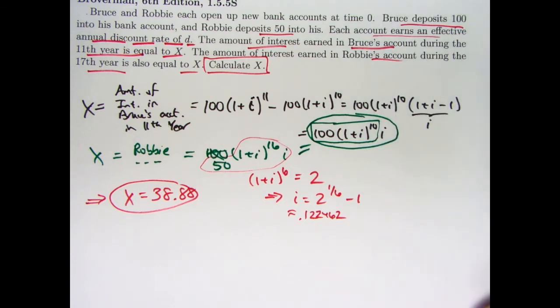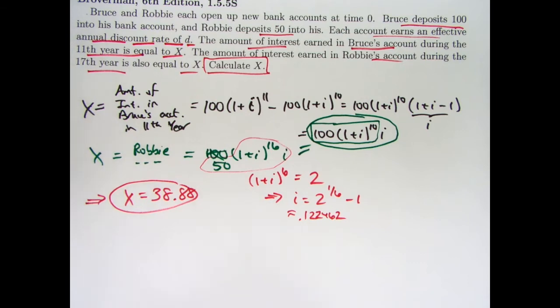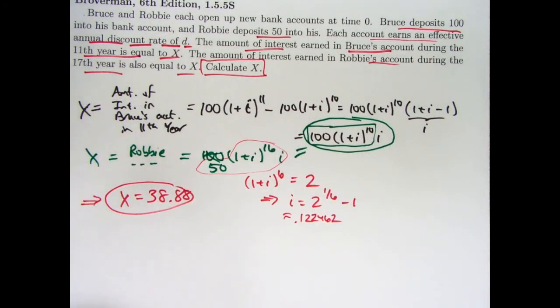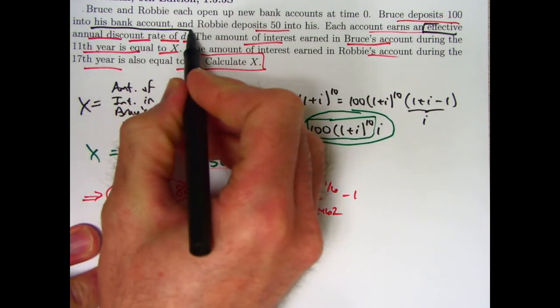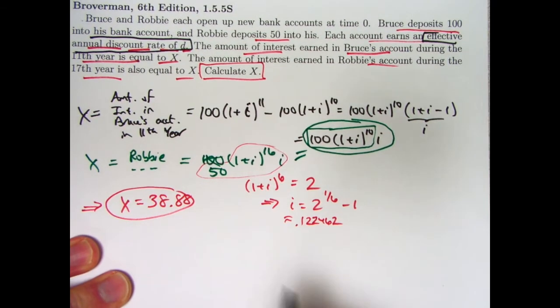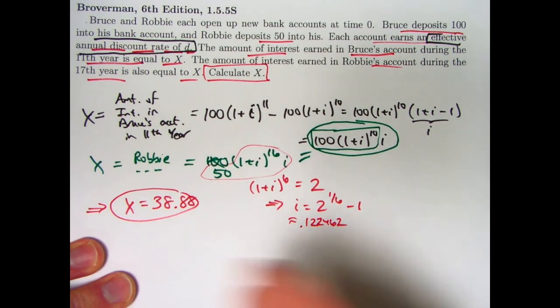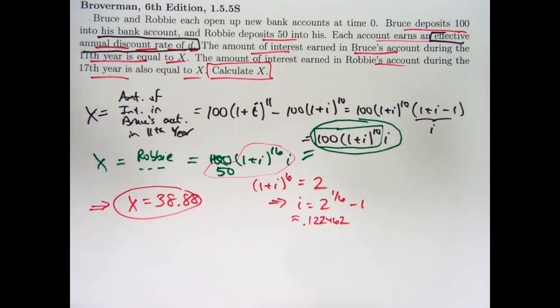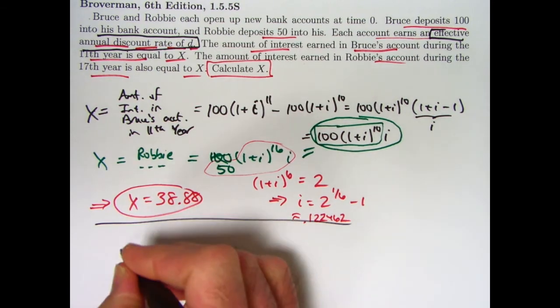Alright, now let's take the opportunity to talk about what an effective annual discount rate is and see that we could have solved it with this idea as well. Though again we didn't have to. I probably won't take the entire time to fully solve it with that idea, but just indicate how it would be solved. What is an effective annual discount rate? Well, let's think about Bruce's account.